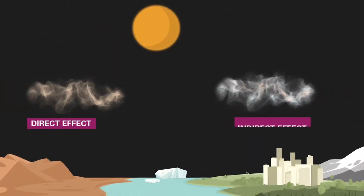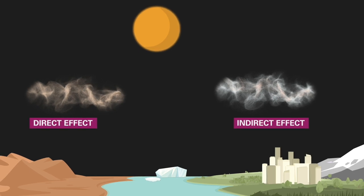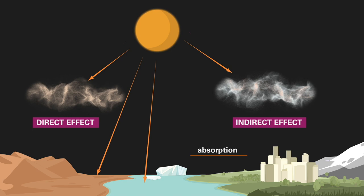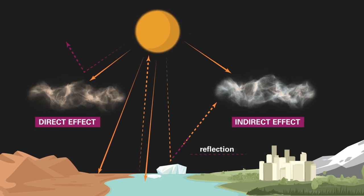Dust particles and their indirect effect on clouds and air chemistry affect how much energy from the sun is absorbed or reflected back into space.